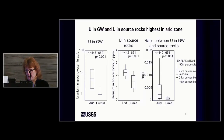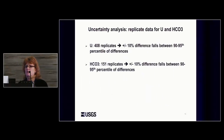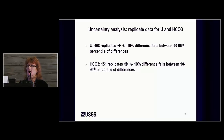To look at uncertainty in our data, we examined replicate data for uranium and bicarbonate — 408 uranium replicate samples and 151 bicarbonate replicates. We found that a plus or minus 10 percent difference in concentration between the two replicates falls between the 90th and 95th percentile of differences for both bicarbonate and uranium, so that becomes our cutoff for measurement error.